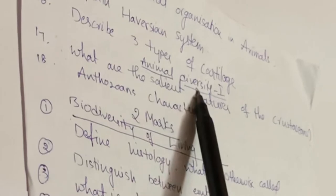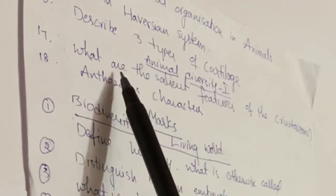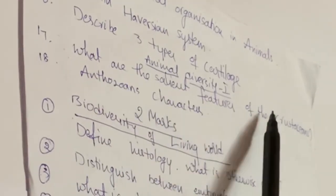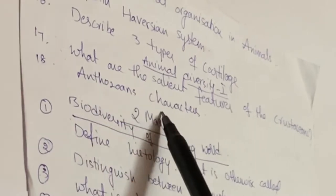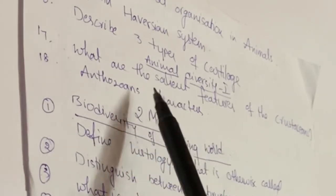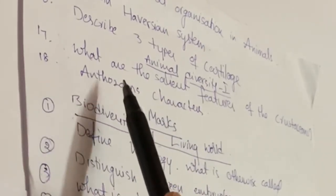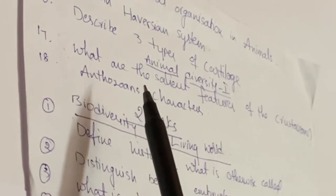From Animal Diversity One: what are the salient features of crustaceans and Anthozoan characters? These 18 questions, if you prepare thoroughly, you can definitely write 3 to 4 questions easily, so you can get 16 marks from these 18 questions.